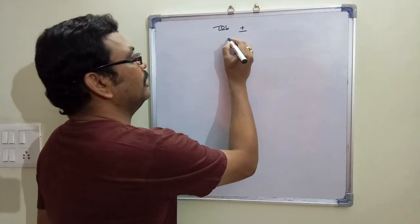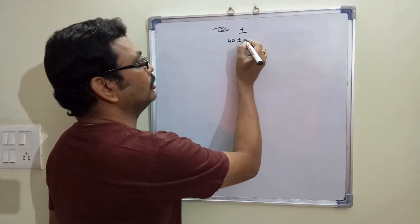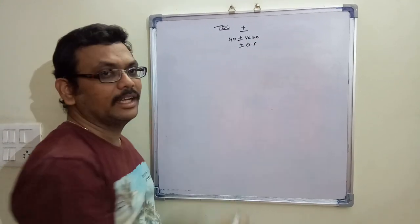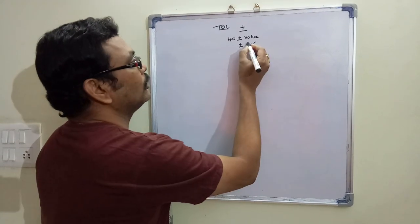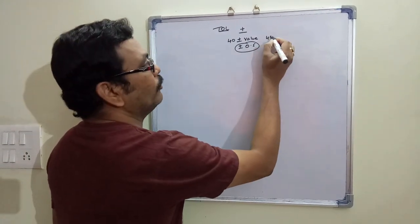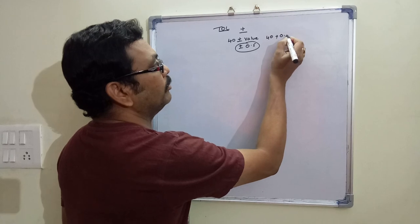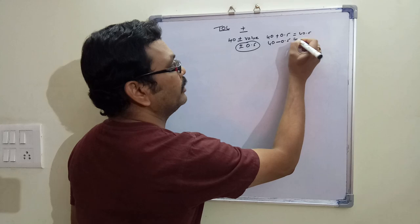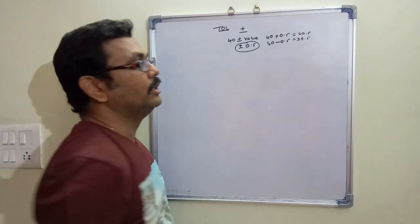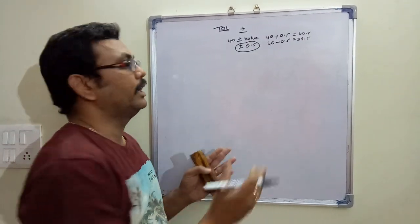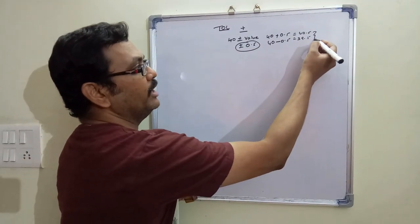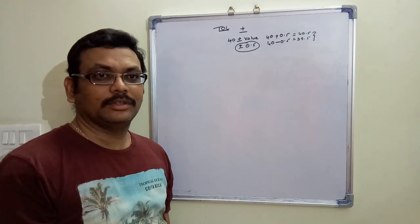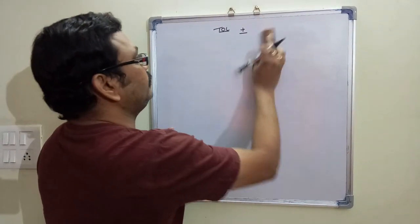The tolerance zone is represented as a plus or minus symbol. For example, 40 ± 0.5 means the component dimension can vary between 40.5 and 39.5. This range is called the tolerance zone.